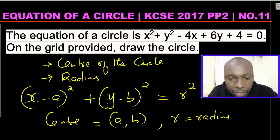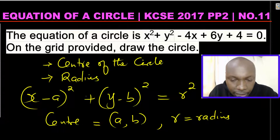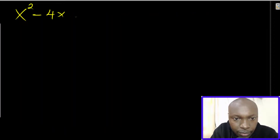Knowing this standard equation of a circle, we need to reorganize the equation we have so that it becomes this form. We convert x squared plus y squared minus 4x plus 6y plus 4 equals 0 into standard form. To do this, we group the like terms and complete the square — first taking x squared minus 4x.